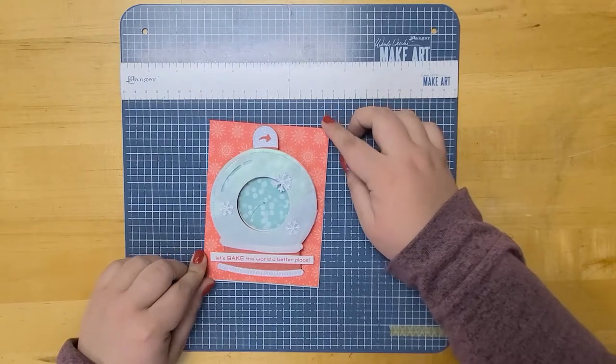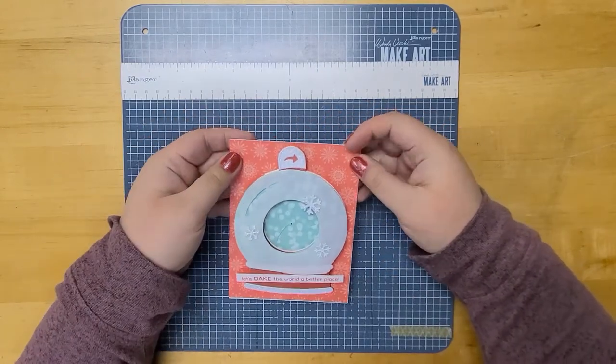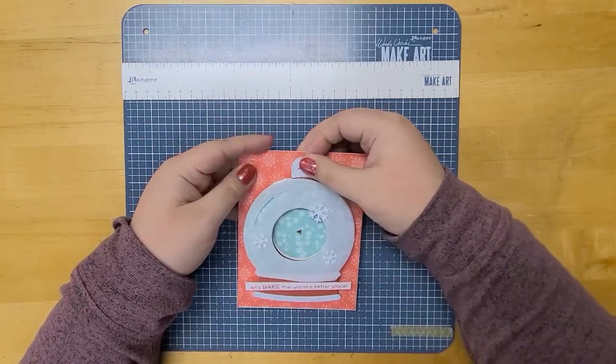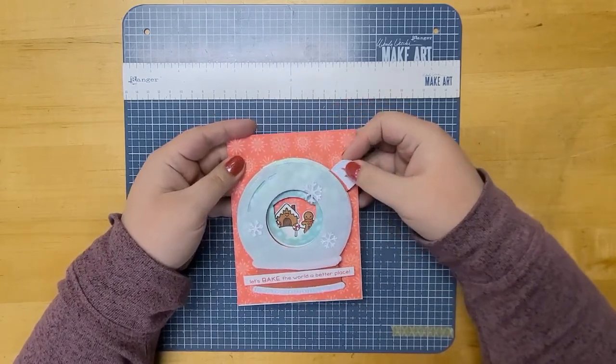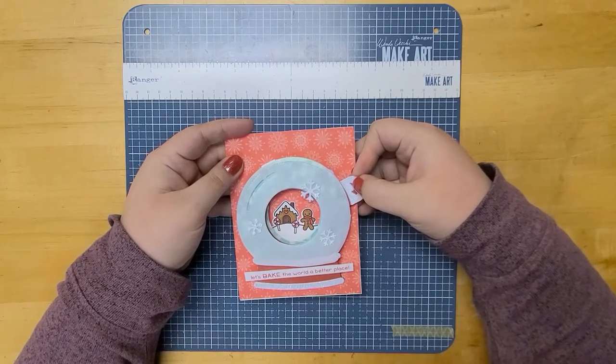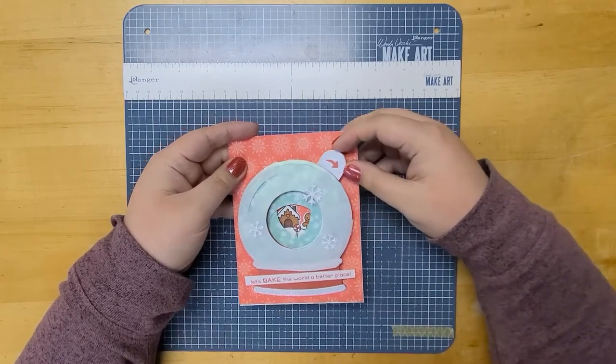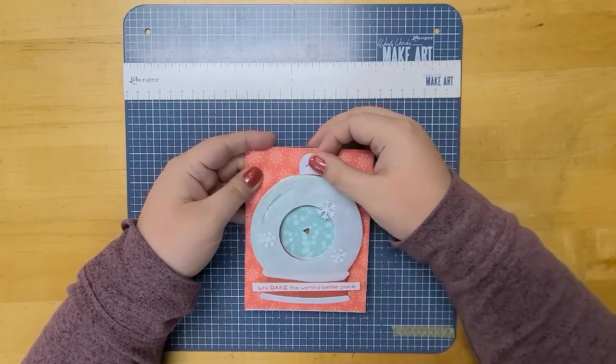This card is part of a kit that we're offering right now, available on our website. This is one of four of the cards and this opens up here to reveal a gingerbread man and his little house in there. And this moving part is the Magic Iris.